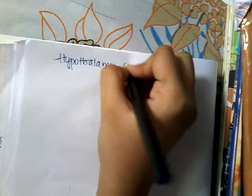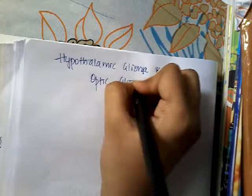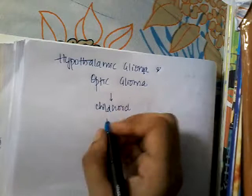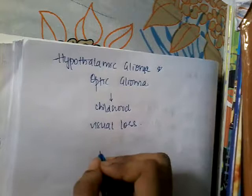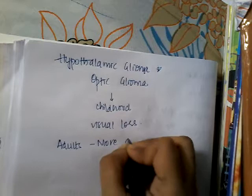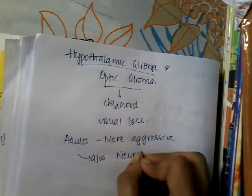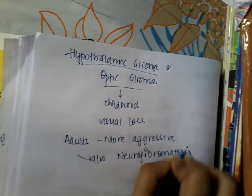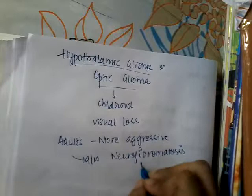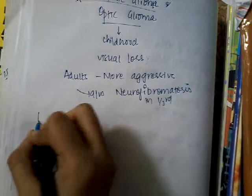Another tumor type is hypothalamic glioma, also called optic glioma. This occurs in childhood and is usually associated with visual loss. In adults, it is more aggressive. It is associated with neurofibromatosis in one-third of patients with hypothalamic glioma.